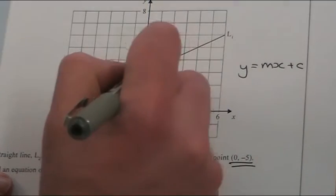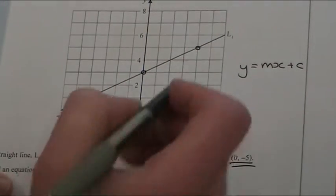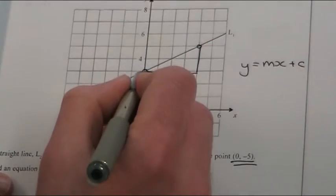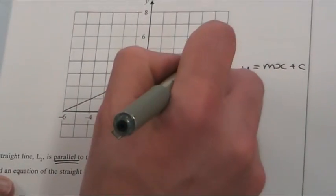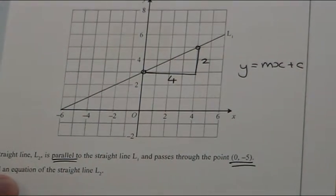So to find the gradient, you choose two good points. So there's a good point, and I'm going to choose this one. Work out how far along and up it goes. So look at the scale. That's 3 to 5, so that's 2. And that is 4.